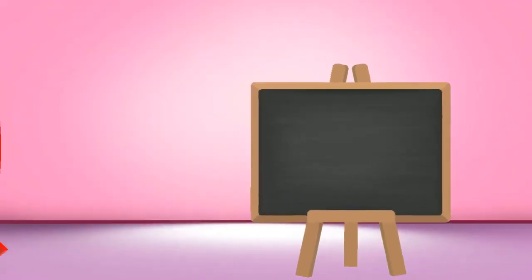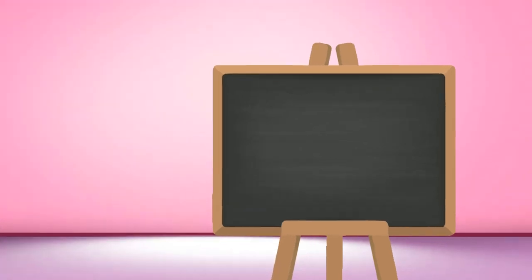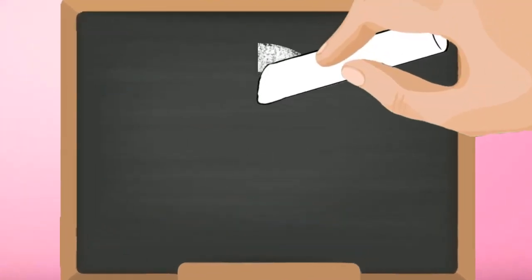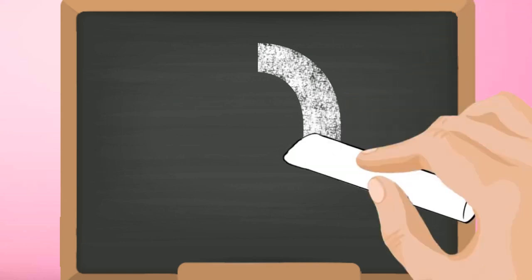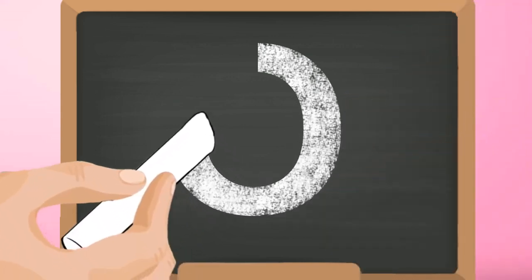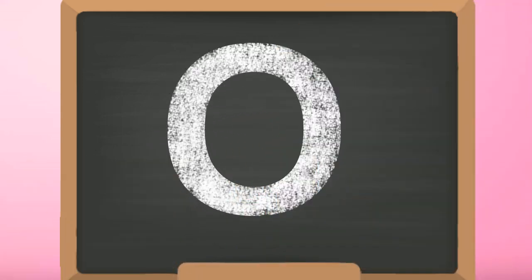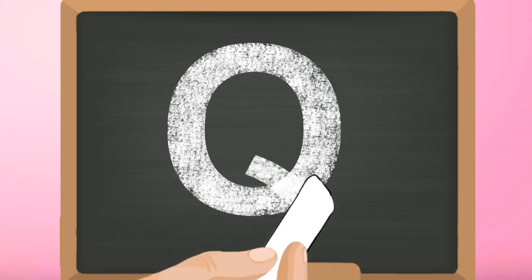Q, capital Q. Start from the top and make the capital letter O. Then from inside the O, make a slanting line to the right reaching the bottom.